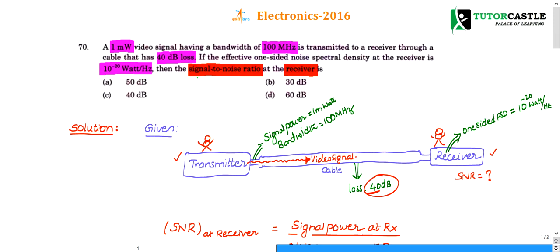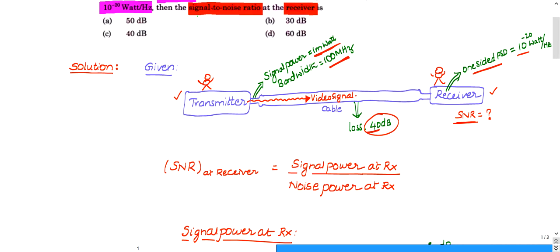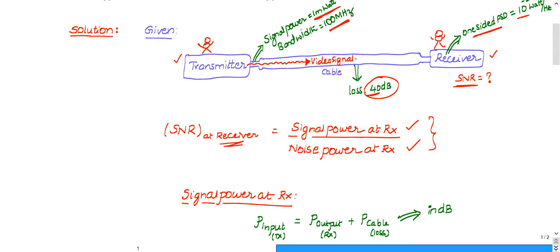The video signal has a power of 1 milliwatt and a bandwidth of 100 megahertz. At the receiver, the one-sided power spectral density is given, and we need to find the signal-to-noise ratio. Note: if you are doing A divided by B in linear scale, in dB scale it becomes A minus B, where A and B are values in dB.